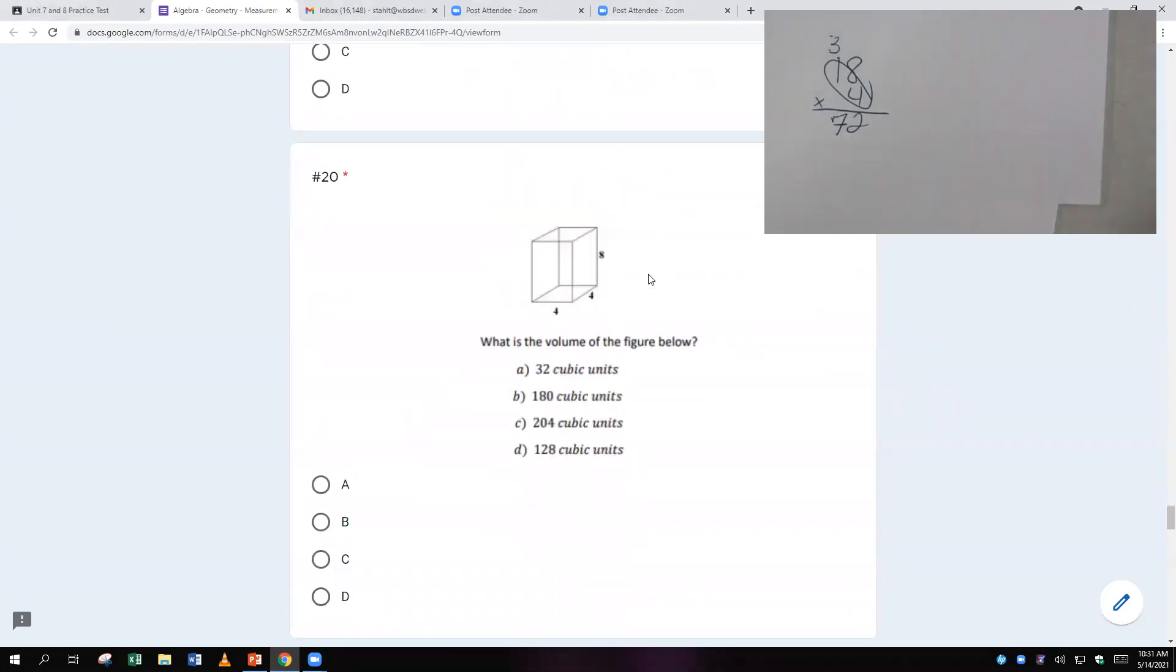And then what about here? Well, here you are going to go and say four times four is sixteen. So it's four by four. That finds the area of the bottom, and then sixteen goes up and down eight. One twenty-eight, which is D.